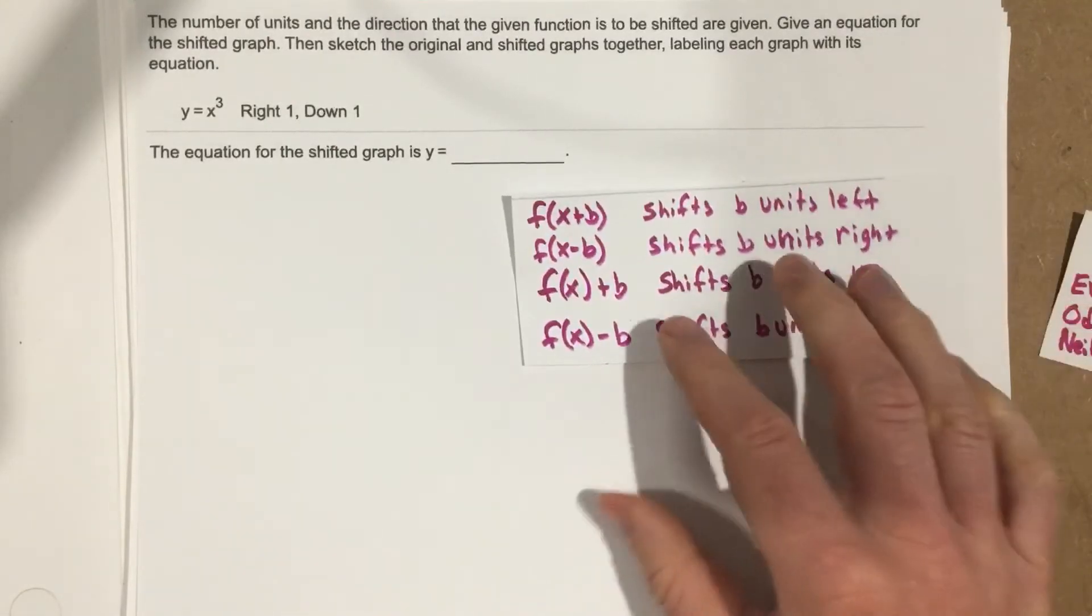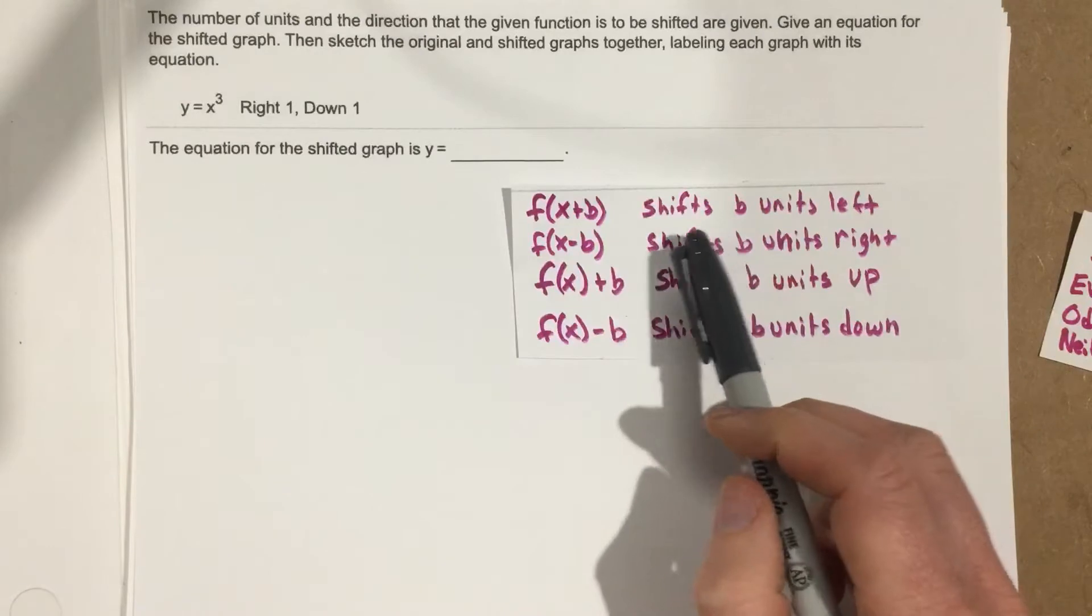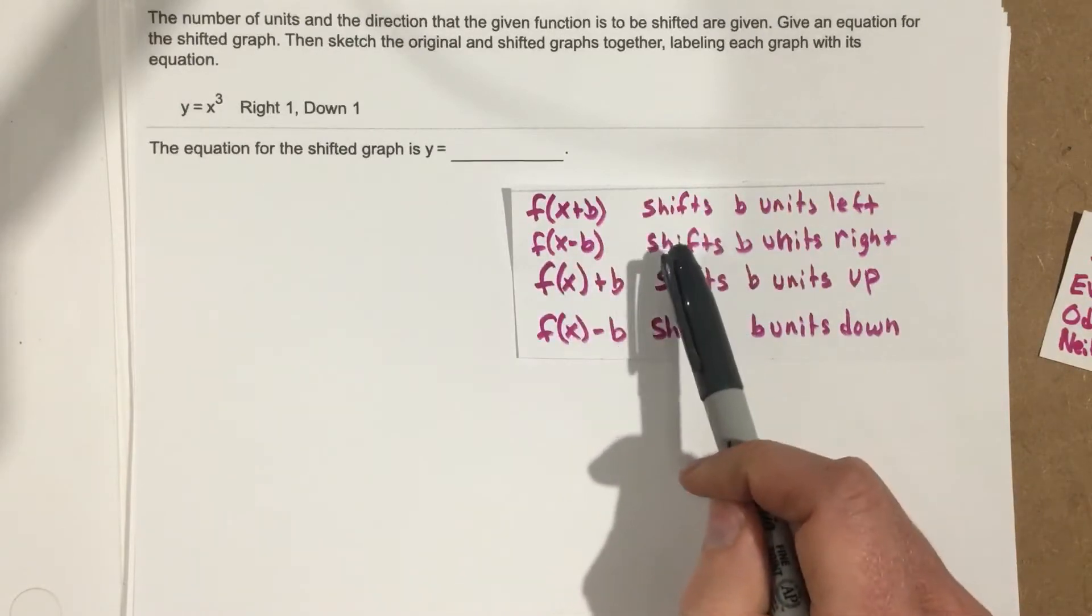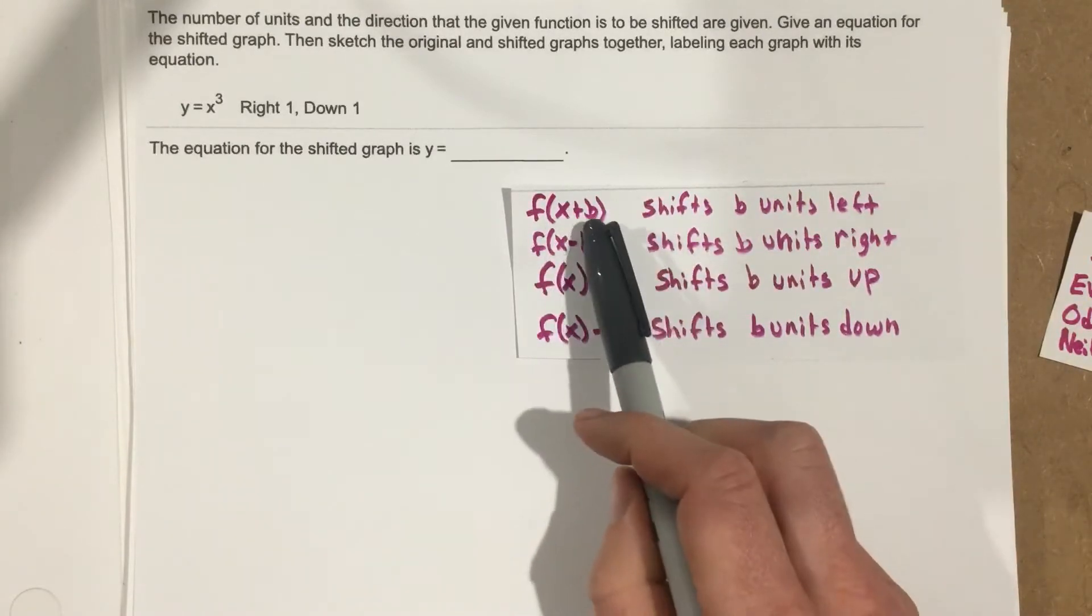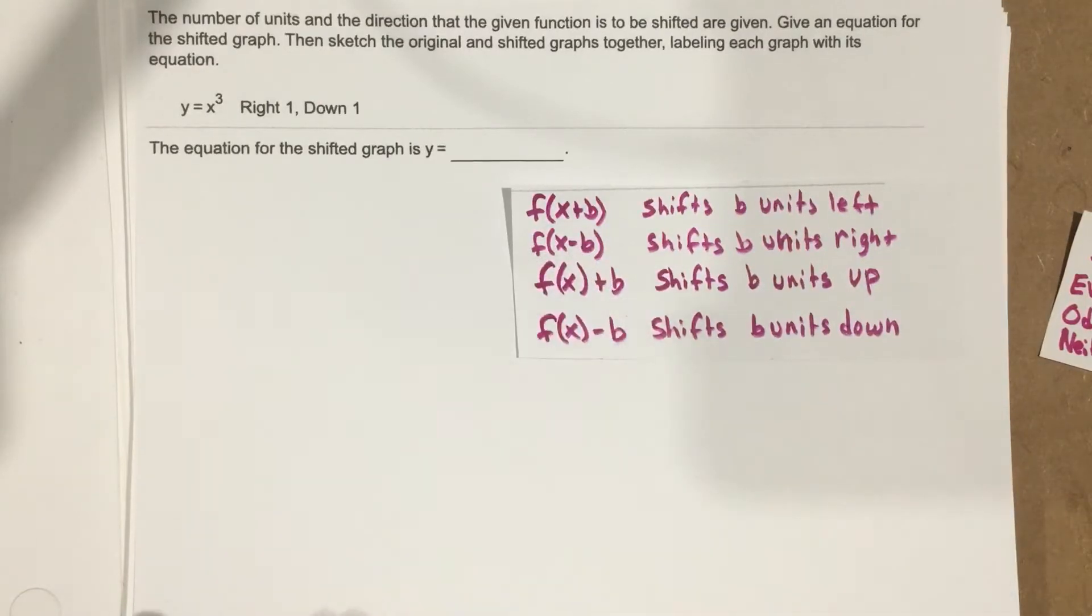We have transformation information here. To shift right or left, we add or subtract to the x value itself in the function. To shift up or down, we add to the entire function.